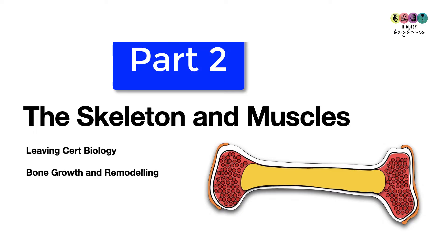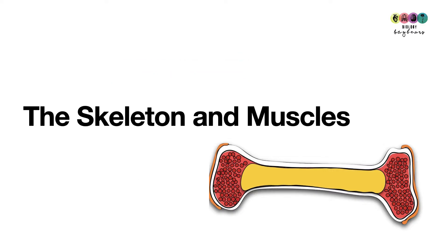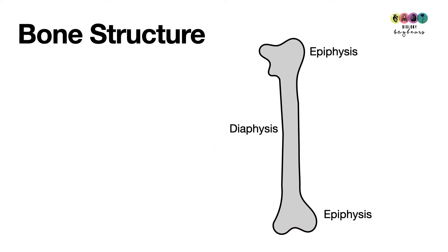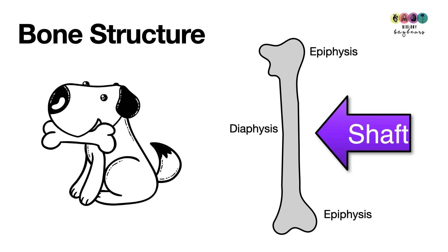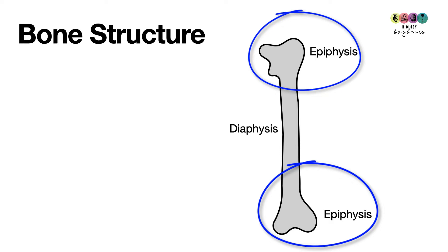This video is part two on the skeleton and muscles, looking at bones, bone growth and remodeling. To start, we'll label the outer structure of a long bone. The shaft is known as the diaphysis — imagine a cartoon dog holding a bone in his mouth with the diaphysis in his mouth — and then the two ends of the bone are the epiphyses.